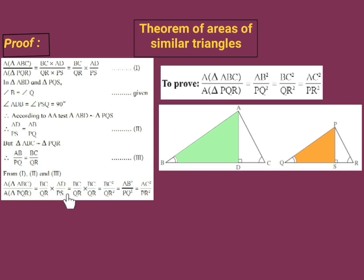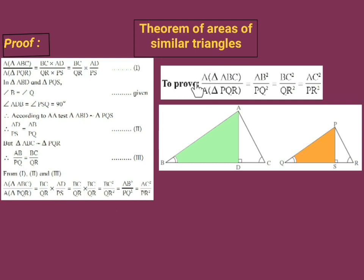Replacing AD upon PS with BC upon QR, we get BC upon QR × BC upon QR, which equals BC² upon QR². Therefore, area of triangle ABC upon area of triangle PQR equals BC² upon QR². Similarly, we can prove it also equals AB² upon PQ² and AC² upon PR². In this way, we have proved the theorem of areas of similar triangles. Thank you.